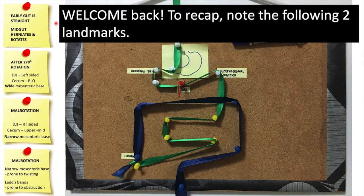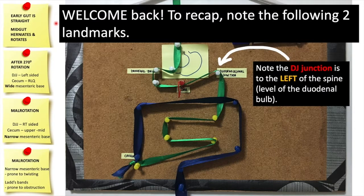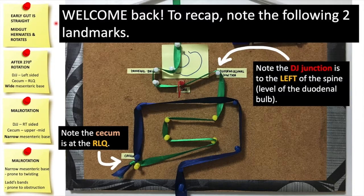Welcome back. To recap, note the following two landmarks: the DJ junction or duodenal jejunal junction to the left of the spine at the level of the duodenal bulb, and the cecum at the right lower quadrant.